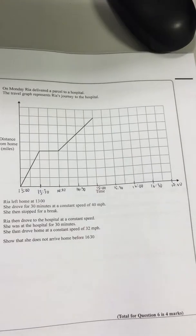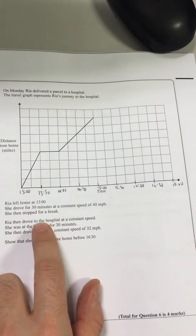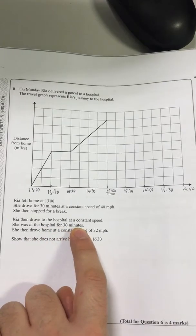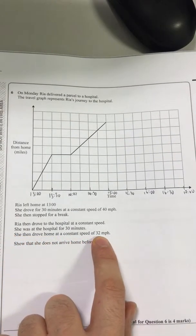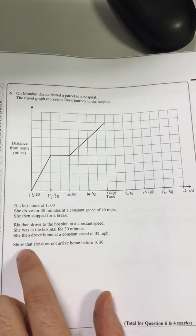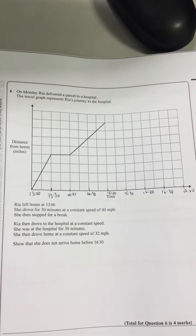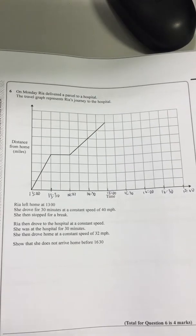She then stopped for a break. She then drove to the hospital at constant speed. She was at the hospital for 30 minutes. She then drove home at a constant speed of 32 miles an hour. She does not arrive home before 16:30. Okay, so that's what we have to do.